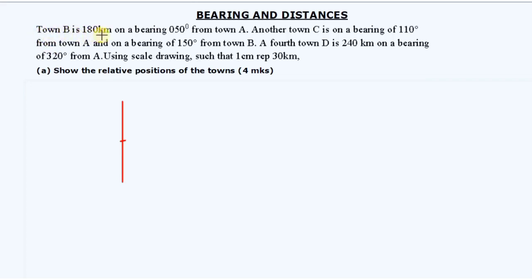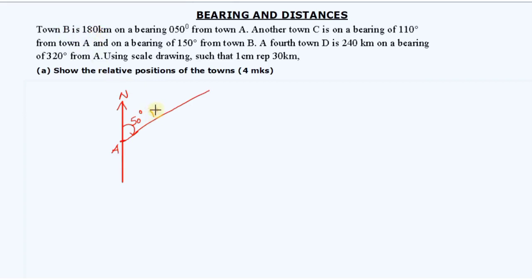We are told that town B is 180 kilometers on a bearing of 50 degrees from town A, so we begin from town A. If town A is right here, this line is the true north. We always measure clockwise from the true north line. The angle specified is 50 degrees, and town B is 180 kilometers away.